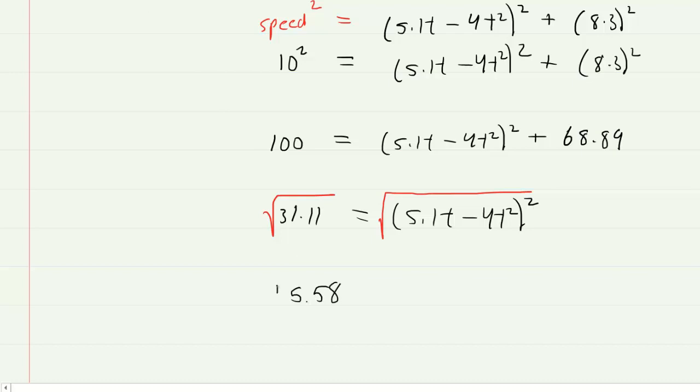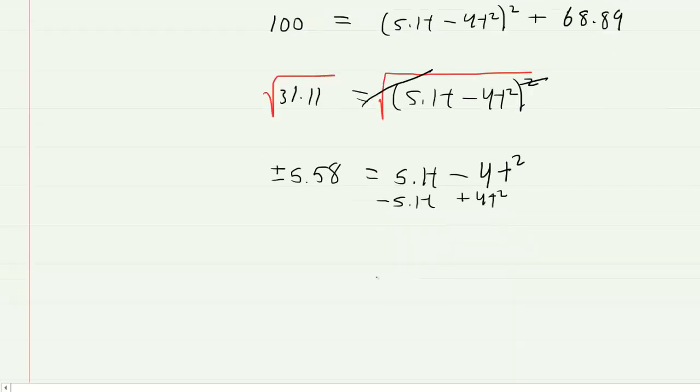Note that you'll get plus or minus 5.58, because whenever you take the square root of a number, you get two roots, the positive and the negative root. And then notice here that the square root and the squaring would cancel, leaving you with just 5.1t minus 4t squared. Let's add the 4t squared to the other side and also subtract the 5.1t. And this way we'll end up with 0 on the right-hand side. The left-hand side will be 4t squared minus 5.1t plus or minus 5.58.